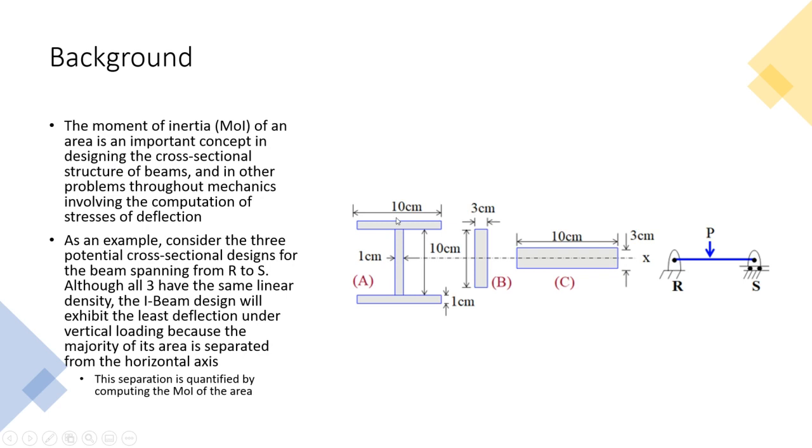So why is that? Or how can we quantify it, I should say? We already said why it is. We need a measure or a metric that basically computes how far area is away from an axis.